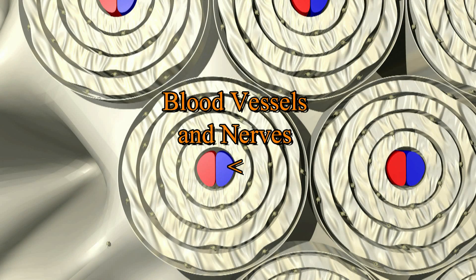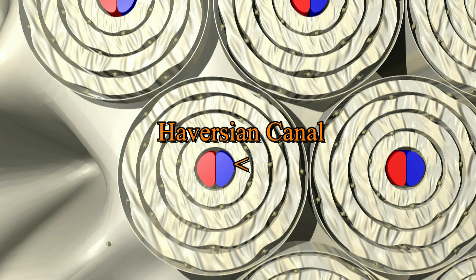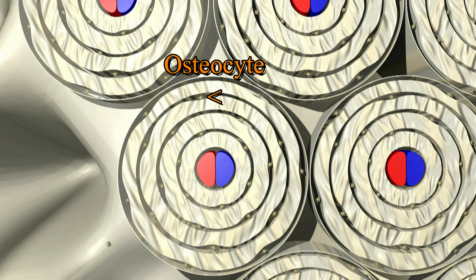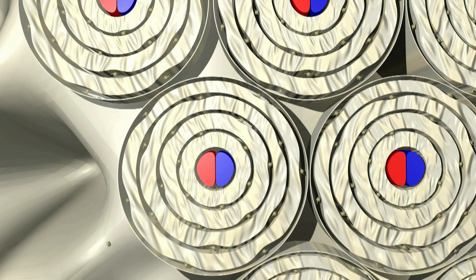Now let's take a closer look at cortical bone. Bone cells need access to the body's blood supply in order to survive and function. Blood vessels and nerves travel up and down the bone through canals known as Haversian canals, surrounded by rings of bone called lamellae. These lamellae are made of bone tissue produced by osteoblasts, which have encased themselves in the bone and become osteocytes, sitting in little pockets known as lacunae. Channels remain between the lamellae — known as canaliculi — that allow osteocytes to communicate with each other and with the blood supply.